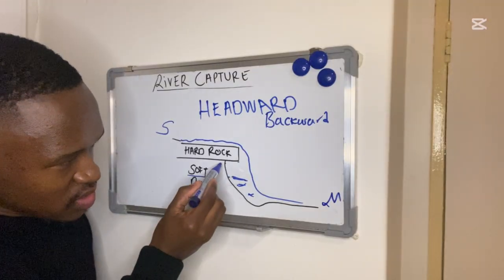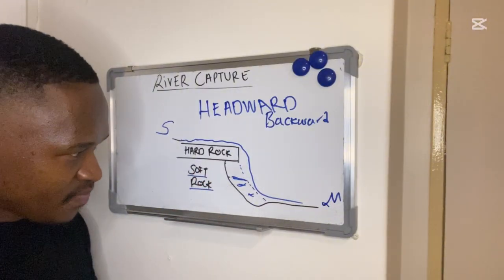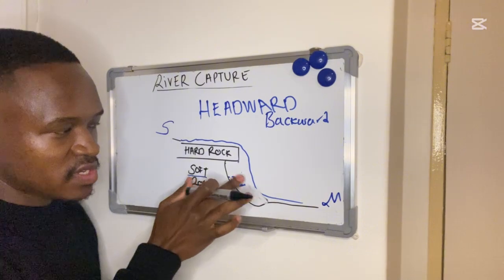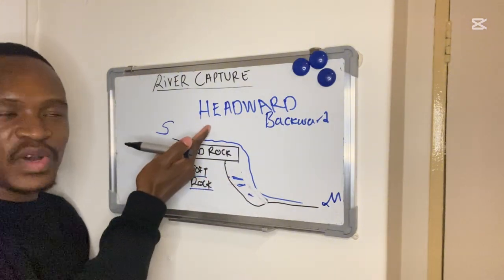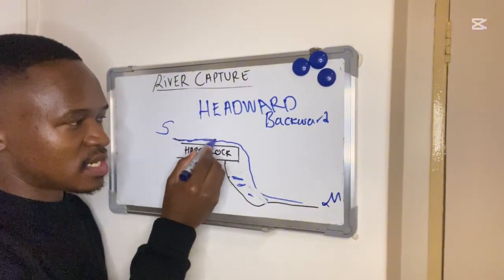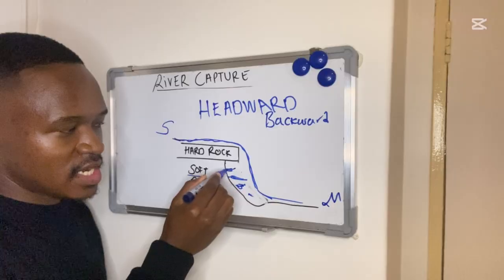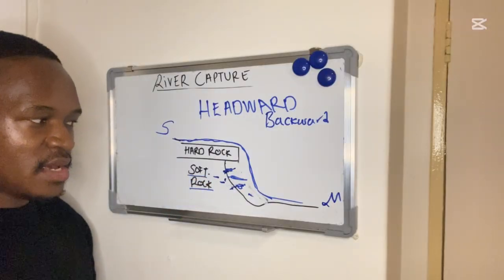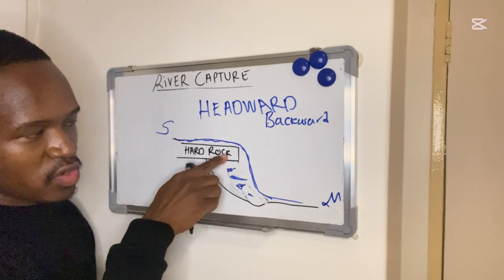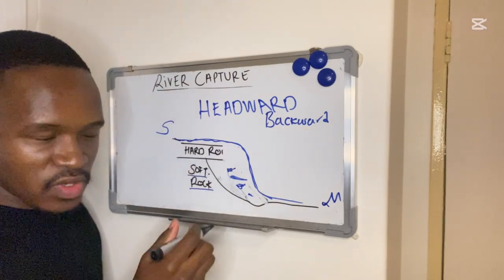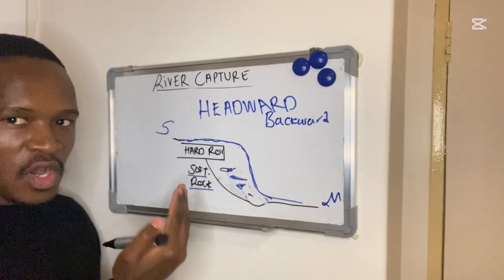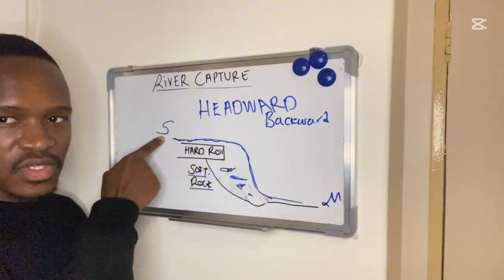You can see the previous position of the soft rock compared to now — it has eroded backward. Because the soft rock erodes faster, as water from the river goes down and hits it, the rock erodes backward toward the source. Eventually the hard rock above will collapse because it becomes too heavy without support underneath. This is headward erosion — when a river erodes backwards towards its source.